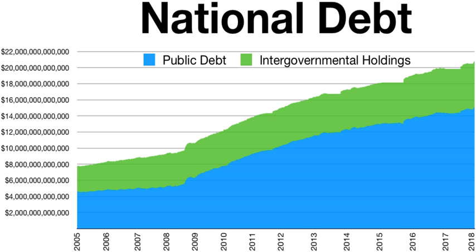The CBO reported several types of risk factors related to rising debt levels. A growing portion of savings would go towards purchases of government debt rather than investments in productive capital goods such as factories and computers, leading to lower output and incomes. If higher marginal tax rates were used to pay rising interest costs, savings would be reduced and work would be discouraged. Rising interest costs would force reductions in government programs, restrict policymakers' ability to use fiscal policy to respond to economic challenges, and increase the risk of a sudden fiscal crisis in which investors demand higher interest rates.